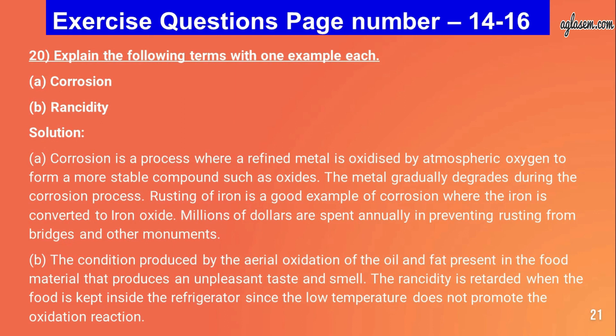Question number twenty: explain corrosion and rancidity with one example each. Corrosion is a process where a refined metal is oxidized by atmospheric oxygen to form a more stable compound such as an oxide; rusting of iron is a good example. Rancidity is the condition produced by aerial oxidation of oil and fat in food material producing an unpleasant taste and smell; rancidity is retarded when food is kept in a refrigerator since low temperature does not promote the oxidation reaction.